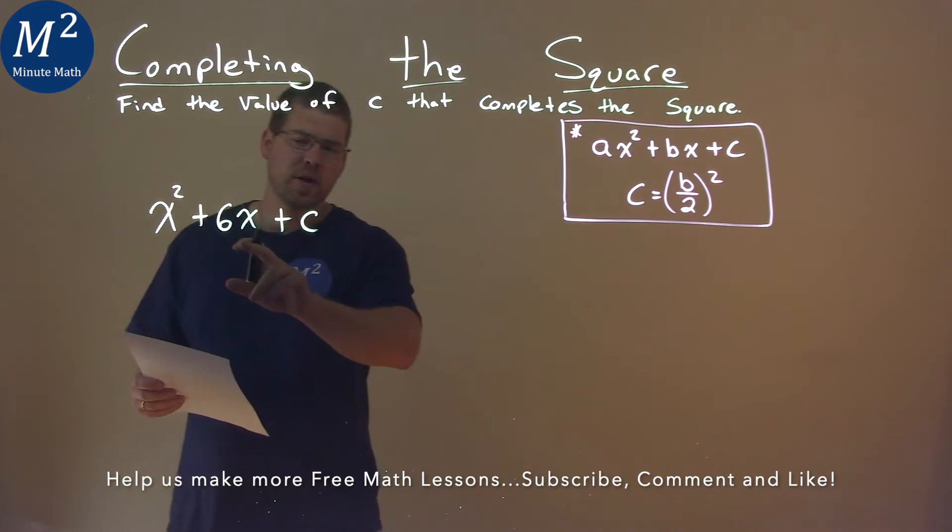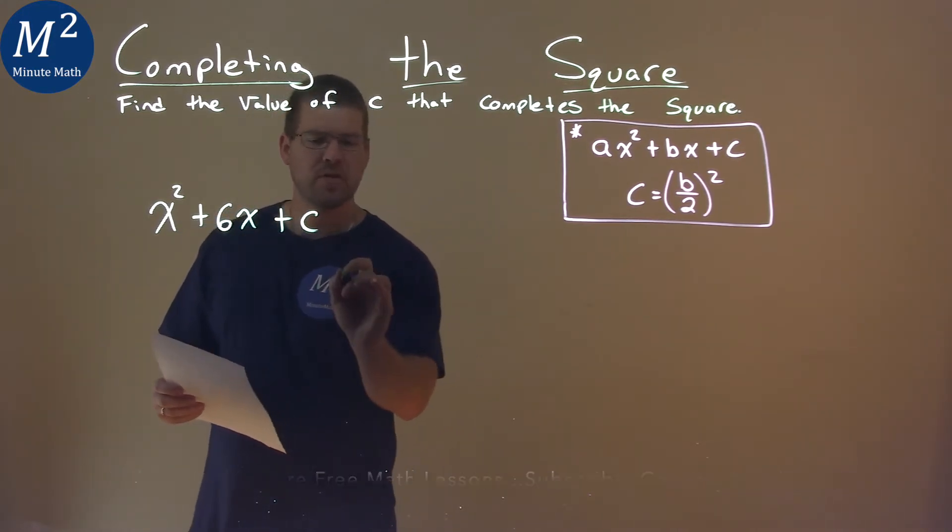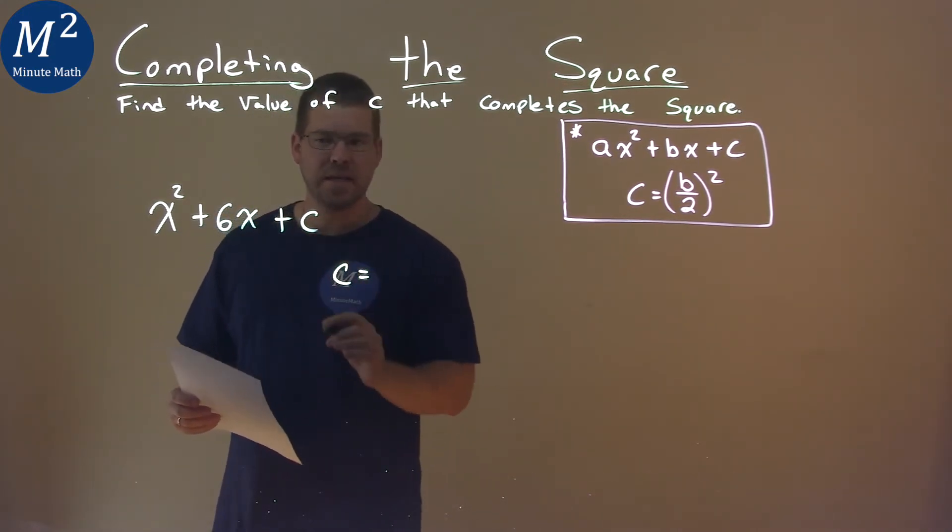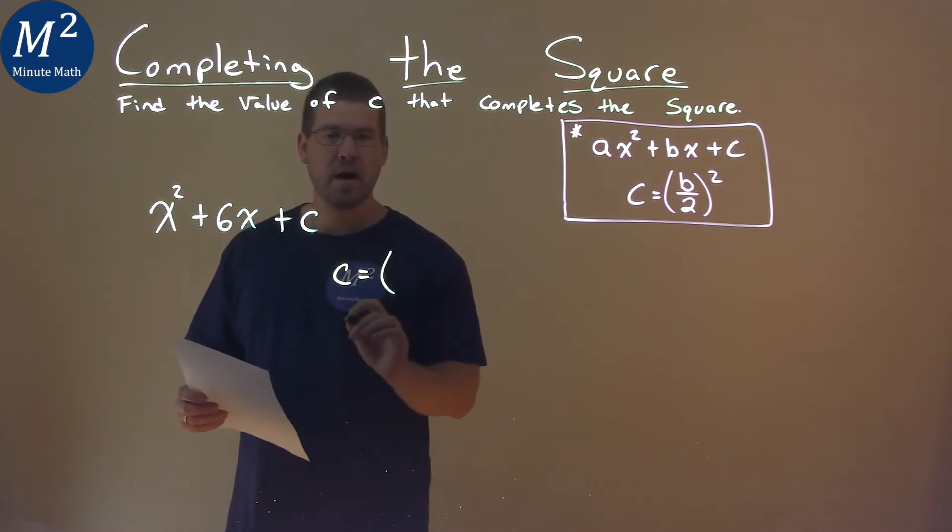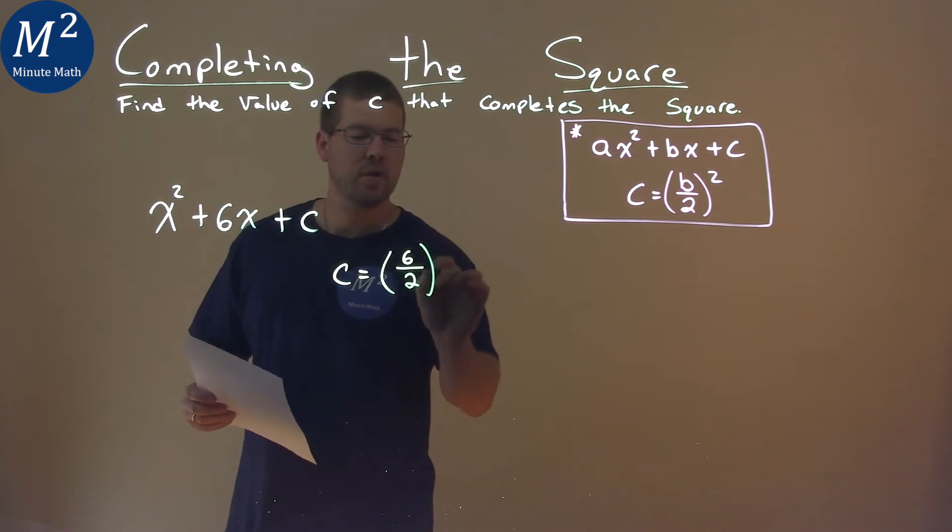I first have to look at my b value, which is 6. So, the c value that we're looking for is equal to that b value, which is 6, divided by 2, all squared.